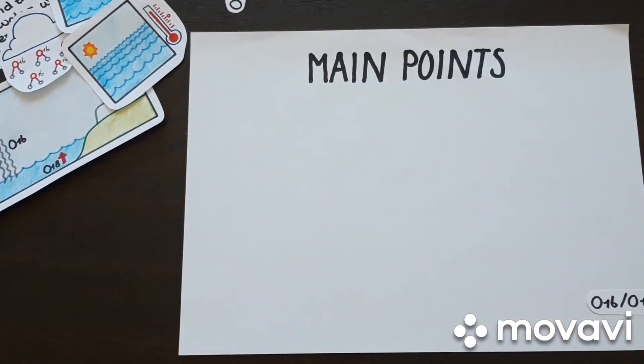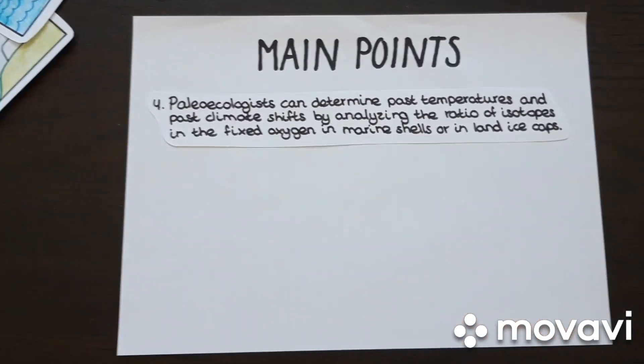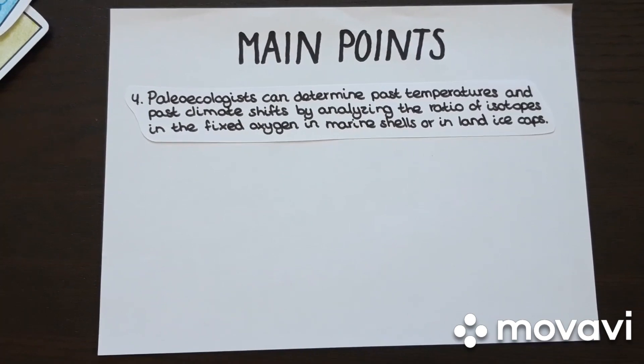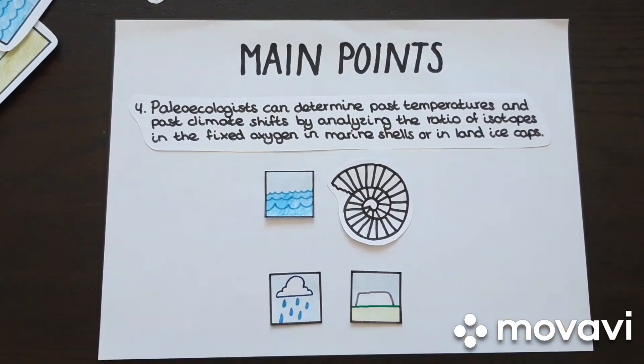4. Paleoecologists can determine past temperature and past climate shifts by analyzing the ratio of isotopes in the fixed oxygen in marine shells or in land ice caps.